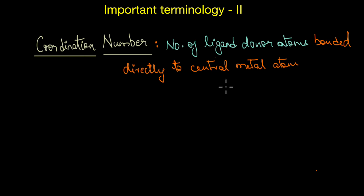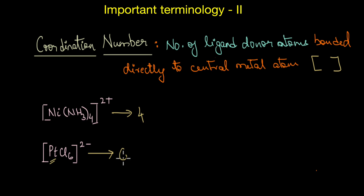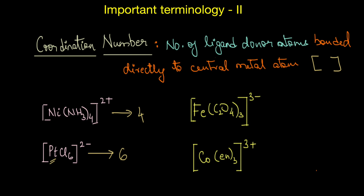The coordination number of a metal ion can be defined as the number of ligand donor atoms to which the metal is directly bonded, enclosed within the square brackets. The coordination number of nickel in this complex is four — nickel is bonded to four ammonia molecules. Similarly, the coordination number of platinum in this complex is six — platinum is bonded to six chloride ions.